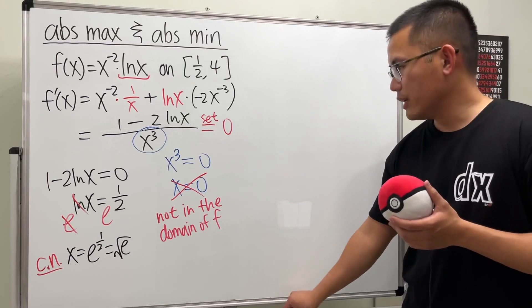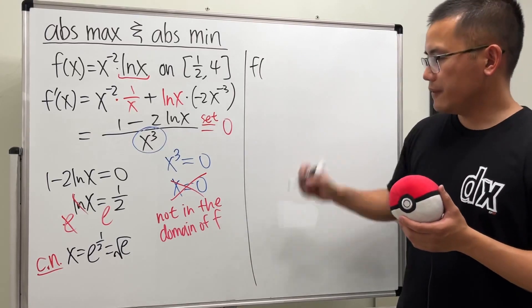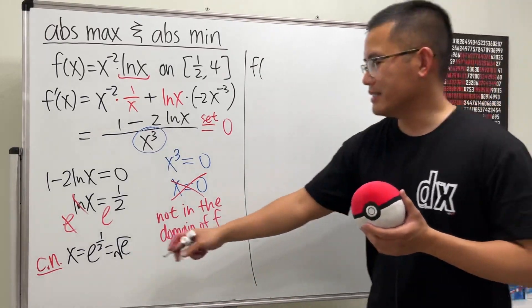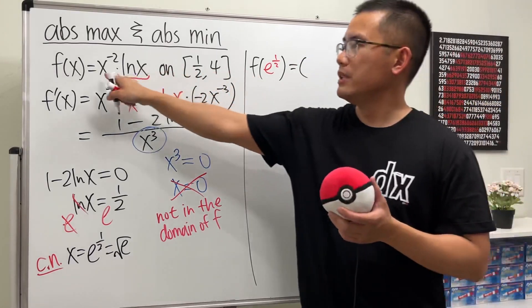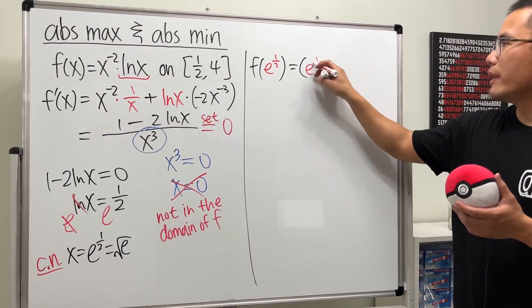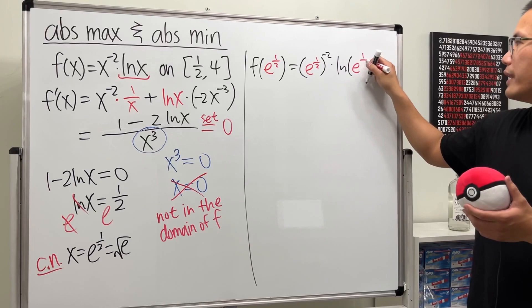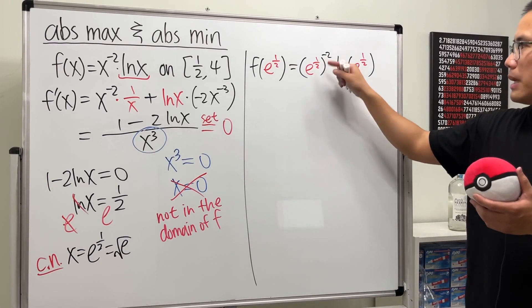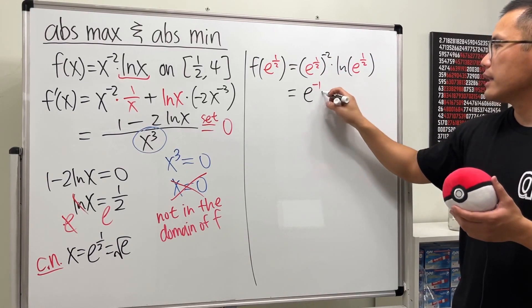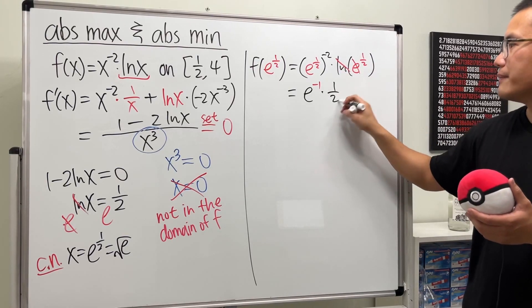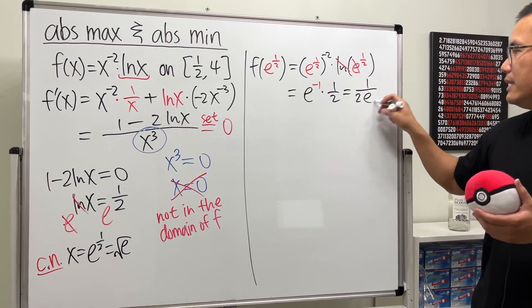Now we are just going to do the usual business, which is just a plug-in. So here we go. f of square root of e. Well, let's write it as e to the 1 half power. That is going to be, put this back to the original: e to the 1 half power raised to the negative 2 times ln of e to the 1 half power. Multiply the powers: 1 half times negative 2 is negative 1. So this is e to the negative 1 times, this and that cancel, so we have 1 half. Altogether, we can put this on the bottom. So we have 1 over 2e. Pretty cool number, I will say.